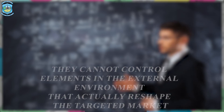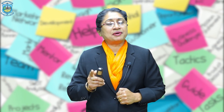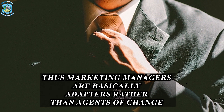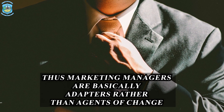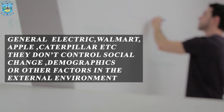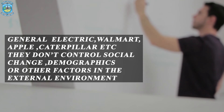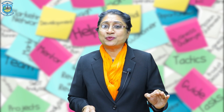Although managers control the marketing mix, they cannot control the elements in the external environment that actually reshape the targeted market. No single business is powerful enough to create major change in the external environment. Thus, marketing managers are basically adapters rather than agents of change. For example, despite the huge size of firms like General Electric, Walmart, Apple and Caterpillar, they don't control social change, demographics or other factors in the external environment. This does not mean the firm is always helpless — the company must start with the marketing environment in searching for opportunities and monitoring threats.